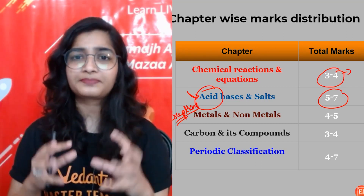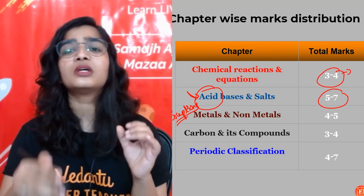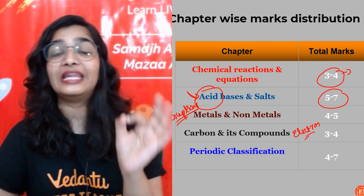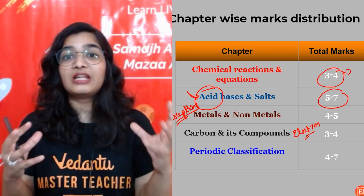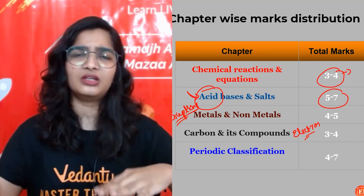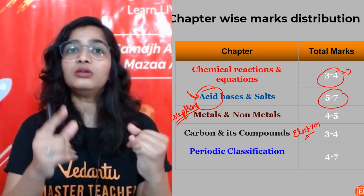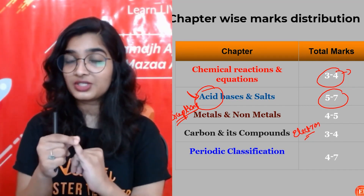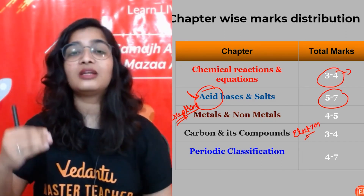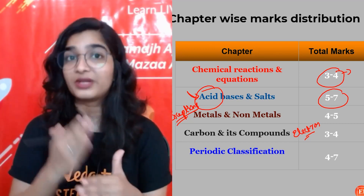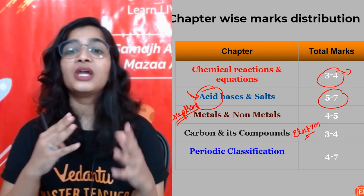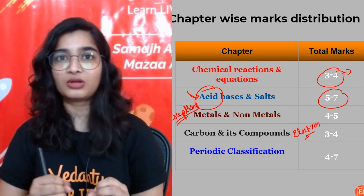Also in Metals and Non-metals: electron dot structures are very important. You may be asked to show the formation of ionic compounds like NaCl, MgCl₂, or CaO — showing the electronic configuration, the transfer of electrons, the formation of ions, and how the ionic compound is formed. Properties of ionic compounds are also important.